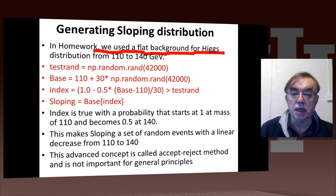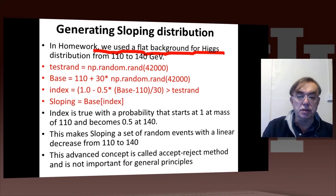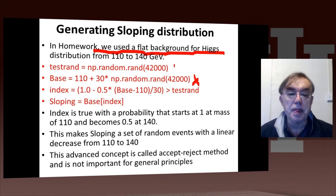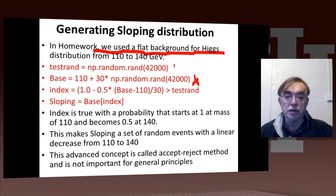these four magic commands here, which illustrate both the power of random numbers and the power of Python, give you a sloping distribution. So we start off here, base equals 110 plus 30 times a random number, which is our uniform distribution of masses between 110 and 140.